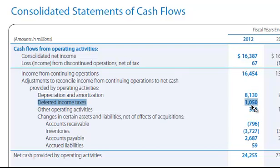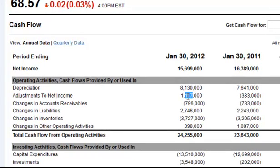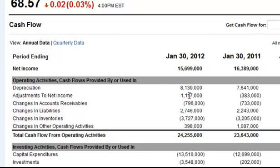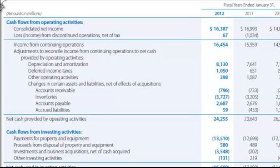But Yahoo's number is still different. We're looking here at deferred income taxes of $1.050 billion, and yet if we go back over to Yahoo, we can see that they're showing $1.117 billion. So there's something else they've added in. They've got multiple items in this category making up this number. If you take this number and subtract it from the number given by Yahoo, you'll find it's missing $67 million. What they've done is taken the loss from discontinued operations net of tax and added that with the deferred income tax line item. So that's a mistake on their part, but now you know.